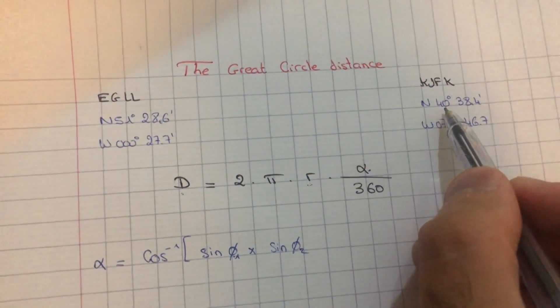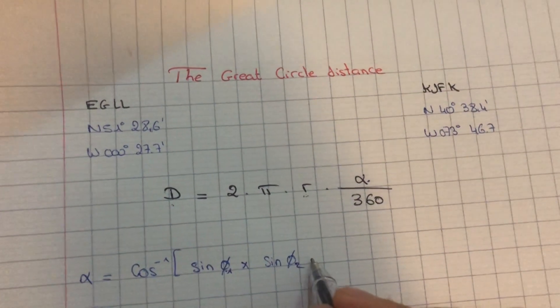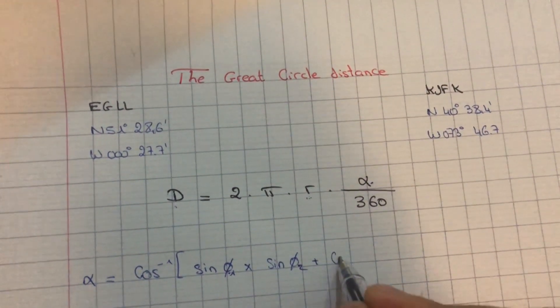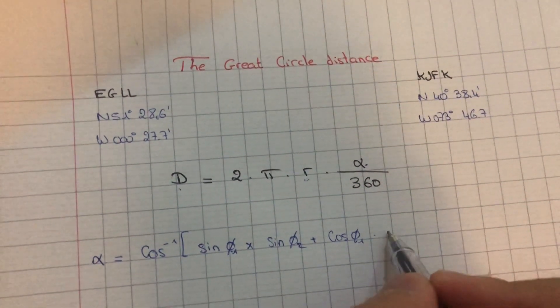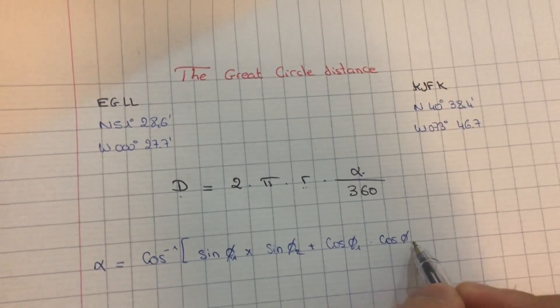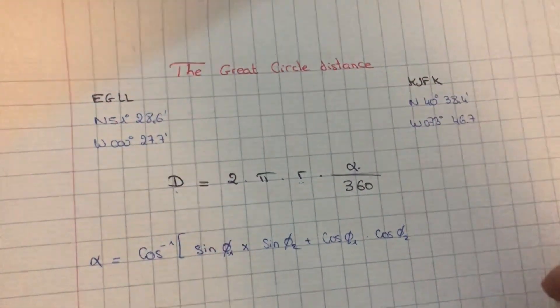of the latitude of the second waypoint, plus again the cosine latitude point A times cosine latitude point two or second point